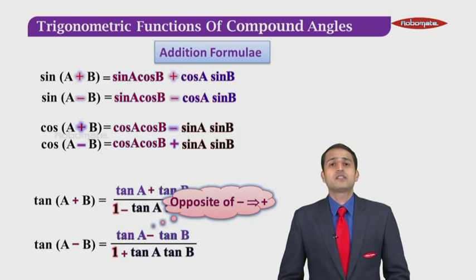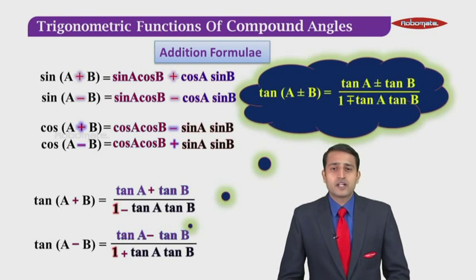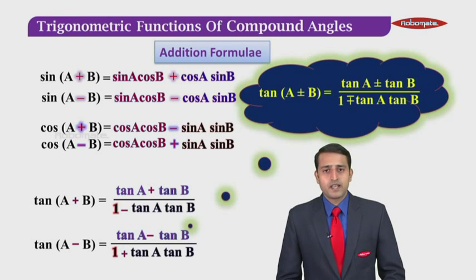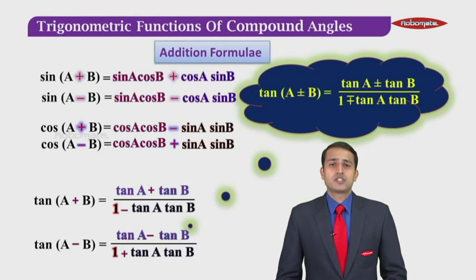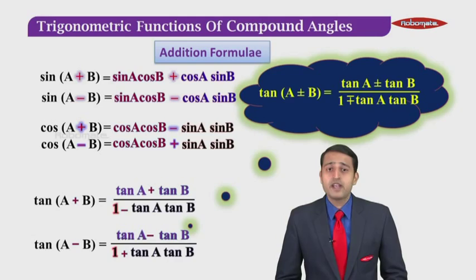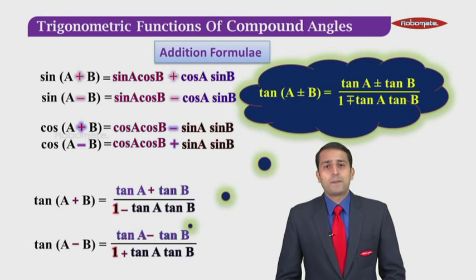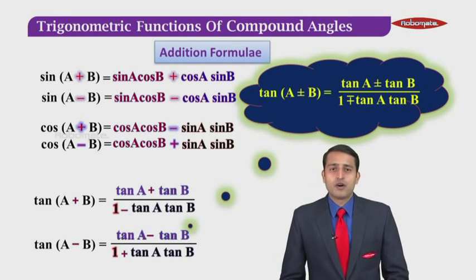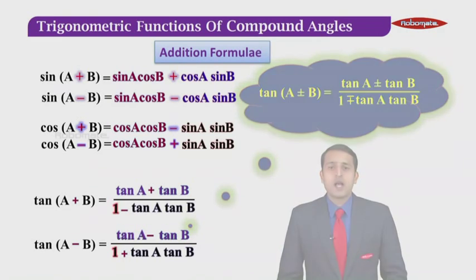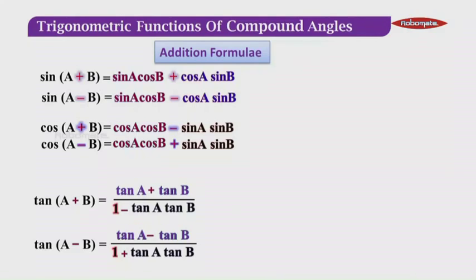Now let us summarize these two formulas. In a nutshell, this can be written as tan of A plus-or-minus B is equal to tan A plus-or-minus tan B upon one minus-or-plus tan A tan B.